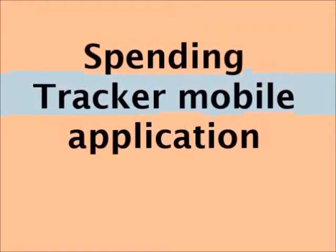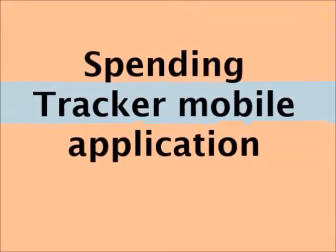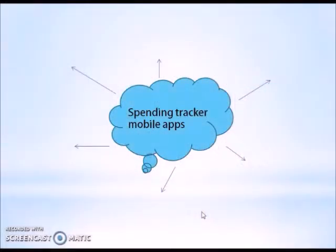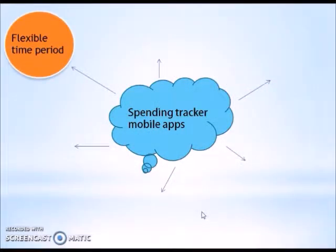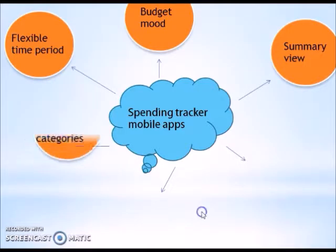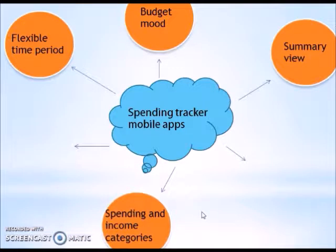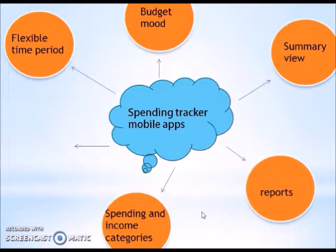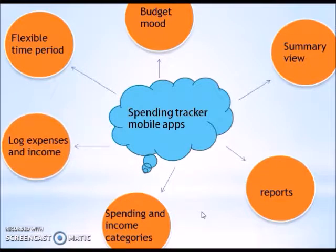Spending Tracker Mobile Application. The Spending Tracker Mobile App has 6 features: Flexible Time Period, Budget Mode, Summary View, Spending and Income Categories, Reports, and the last one is Expenses and Income Log. These are the features provided in the app for the user to use.